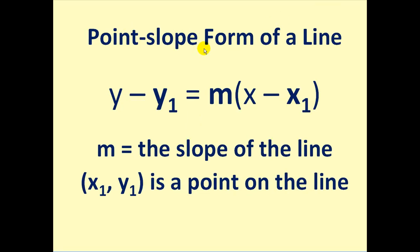Point-slope form of a line is in the form y minus y₁ equals m times the quantity x minus x₁, where m is the slope of the line and the point (x₁, y₁) is on the line.